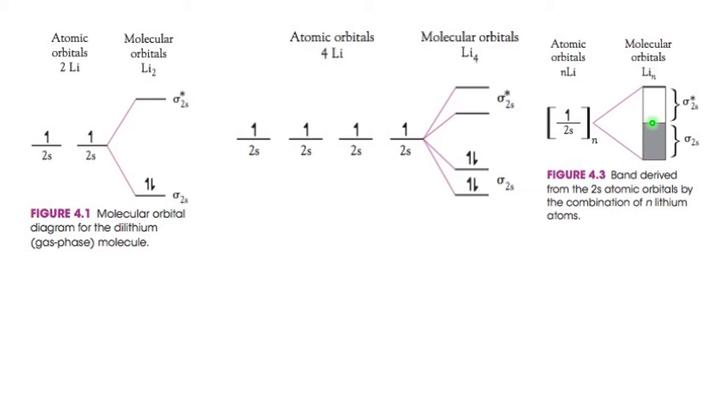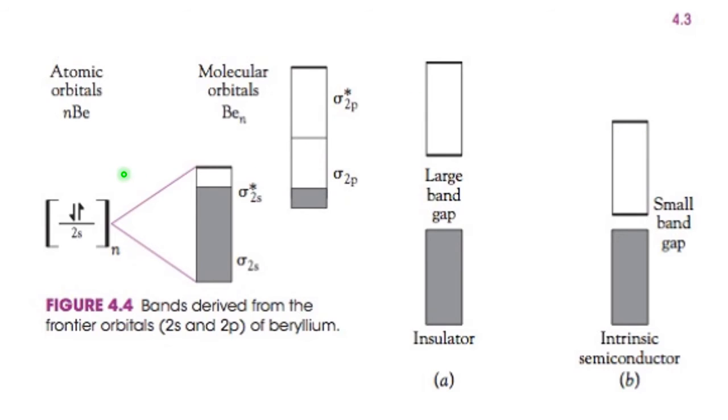Let's look at beryllium. Beryllium does not make Be2, it doesn't make Be4, but you can have a band of bonding and anti-bonding orbitals made of 2s atomic orbitals. Now you'll have exactly the same made of 2p orbitals because there are so many of them.